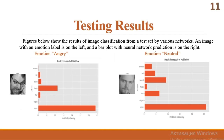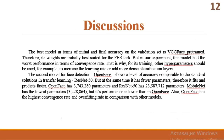Let's look deeper at the classification results. Figures below show the results of image classification from a test set by various networks. An image with an emotion label is on the left, and a bar plot with neural network predictions is on the right. The best model in terms of initial and final accuracy on the validation set is VGGFace pre-trained. Therefore, its weights are initially best suitable for the FER task. But in our experiment, this model had the worst performance in terms of convergence rate.